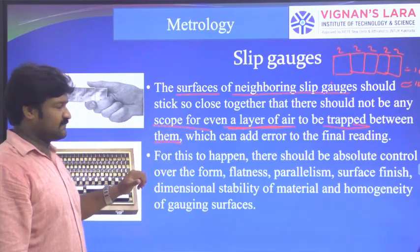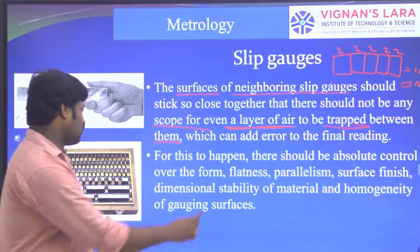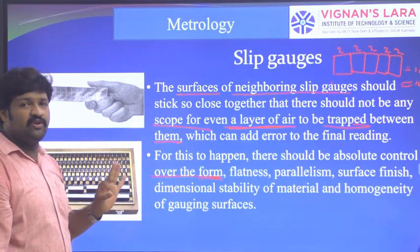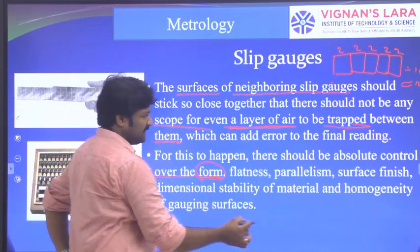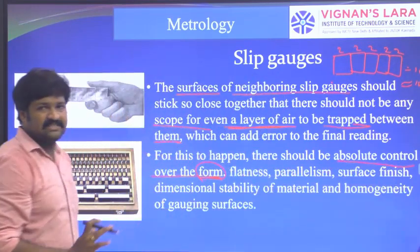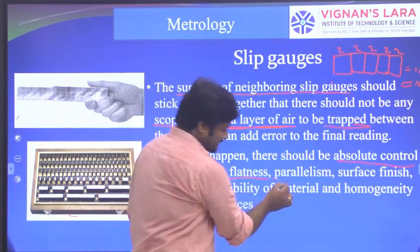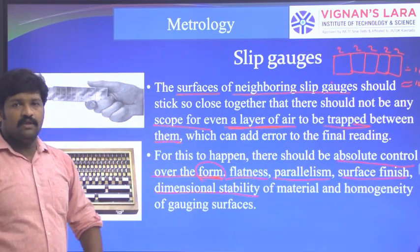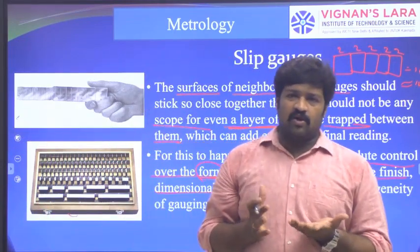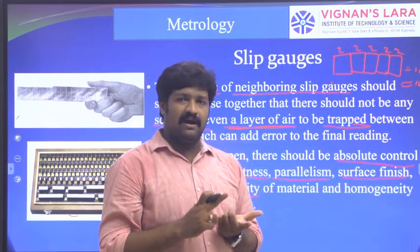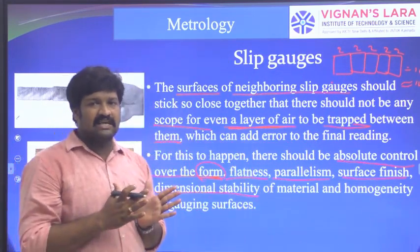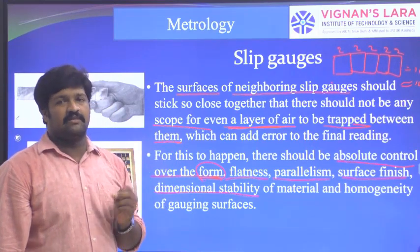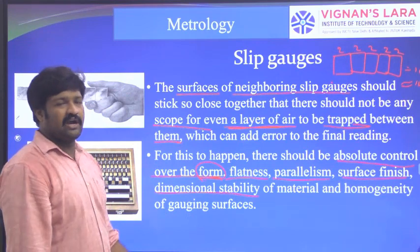For wringing to work properly, there should be absolute control over the form — meaning the shape of the slip gauge must be uniform. The slip gauges must have good control of surface finish, flatness, parallelism, and dimensional stability. If all these conditions are satisfied, then only we can get an accurate dimension. If the component has an irregular dimension, the output will also vary and we will not get good accuracy.